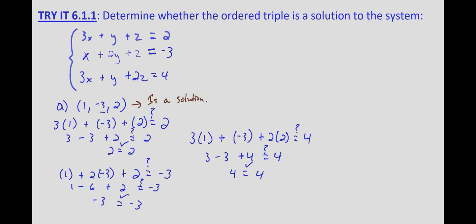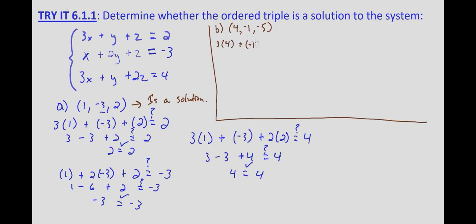Now with part B, we're asked to check the ordered triple 4, negative 1, negative 5. Again, we start with 3x plus y plus z equals 2. So 3 times 4, plus negative 1, plus negative 5 — does that equal 2? 3 times 4 is 12, minus 1 is 11, minus 5 is 6. So 12 minus 1 minus 5 equals 6, which does not equal 2. Therefore, we don't even need to check the other two equations — 4, negative 1, negative 5 is not a solution.